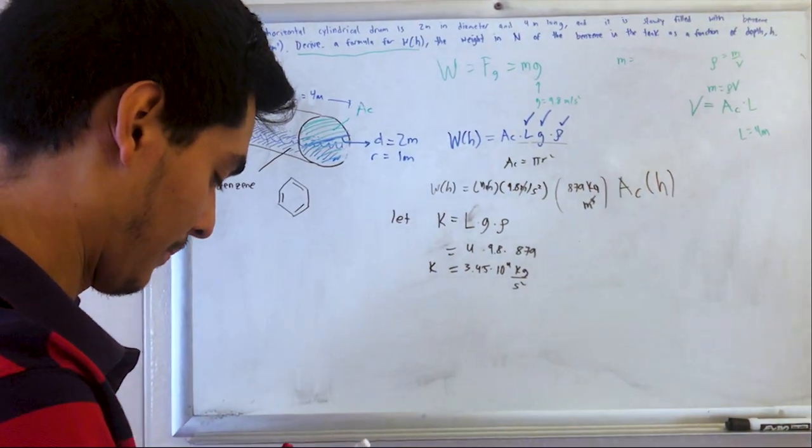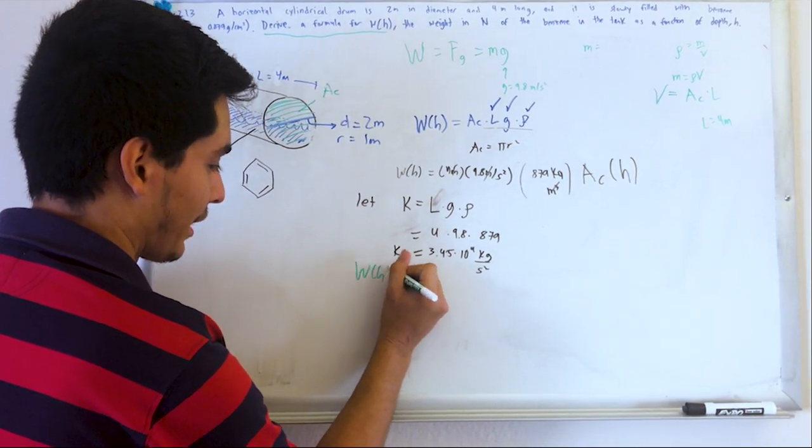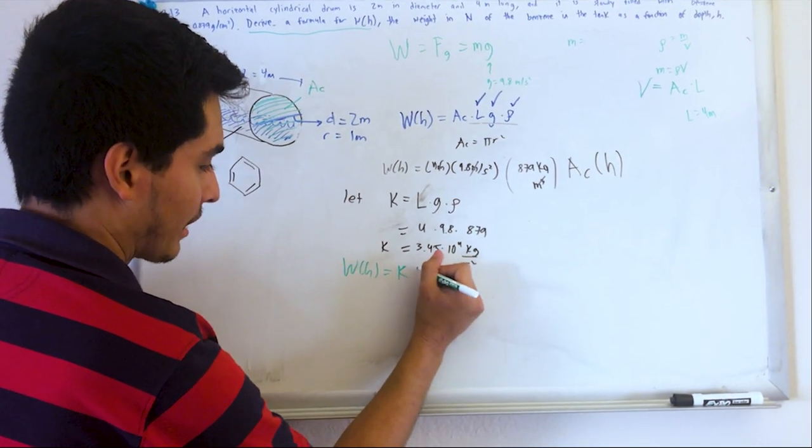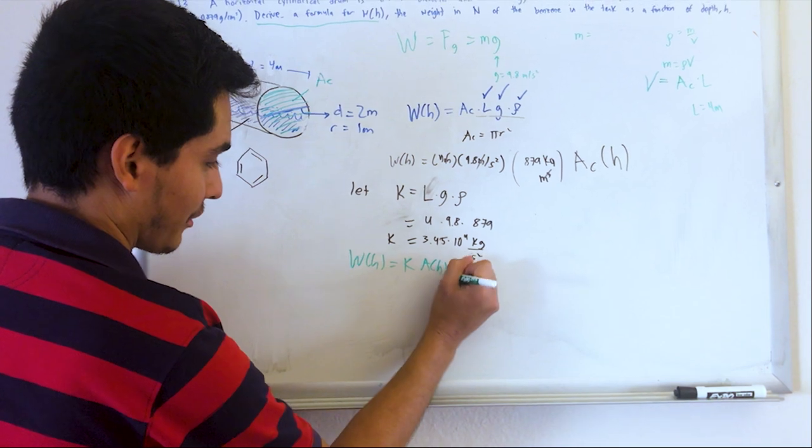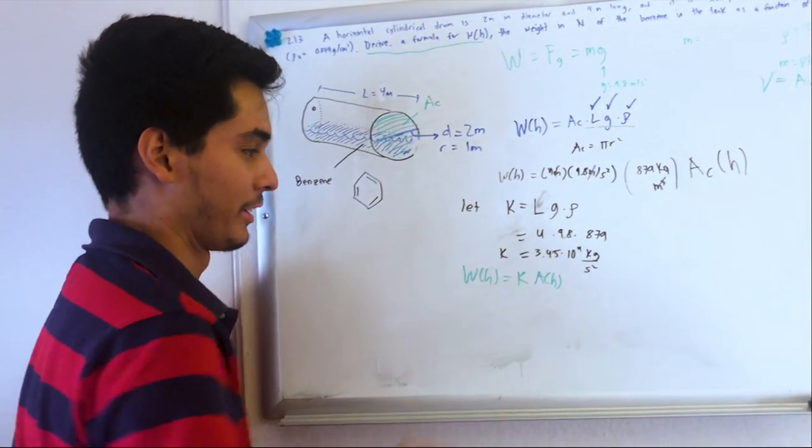So in our final equation, we have the weight as a function of height. It's gonna be this constant times the area as a function of height. So the question is, how the heck do we solve for that area?